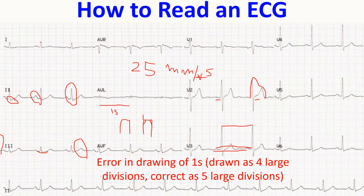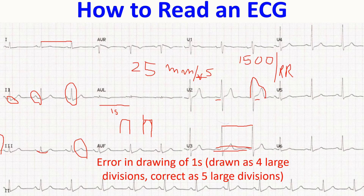If you measure the RR interval and divide 1500 by that value — since at 25 millimeters per second, 1500 small squares equals one minute — dividing 1500 by the RR interval (in small squares) gives you the heart rate in beats per minute. That is how you calculate the heart rate on an ECG.